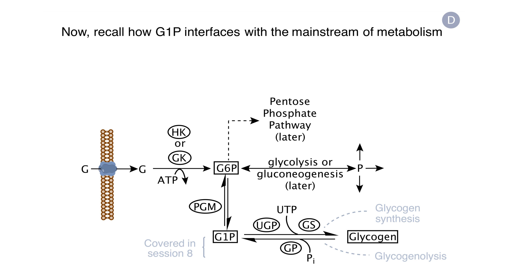The opposite reaction also occurs — if you have glucose 6-phosphate, phosphoglucomutase will convert it to glucose 1-phosphate. Glucose 6-phosphate is an intermediate in glycolysis, gluconeogenesis, and another future pathway, the pentose phosphate pathway. All of this shows us that glucose 6-phosphate is a crossroads, and one of the branches that leads from it and to it is by way of glucose 1-phosphate.